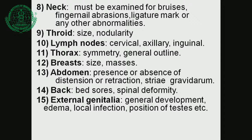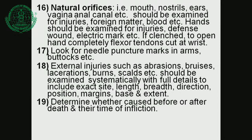Thorax: symmetry and general outline. Breasts: size and masses if female. Abdomen: presence or absence of distension or retraction, striae gravidarum. Back: for bedsores and spinal deformity. External genitalia: general development, edema, local infection, position of testes, etc. The natural orifices — mouth, nostrils, ears, vaginal and anal canals — should be examined for injuries, foreign matter, blood, etc.